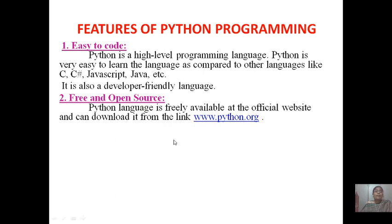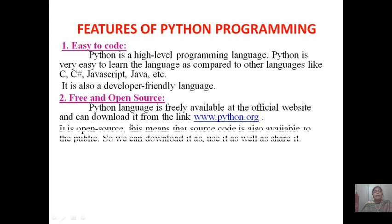Second one, it is free and open source. Python language is freely available at the official website www.python.org and you can download it from this link. And it is open source, that means its source code is also available to the public and we can download it and also we can share it.